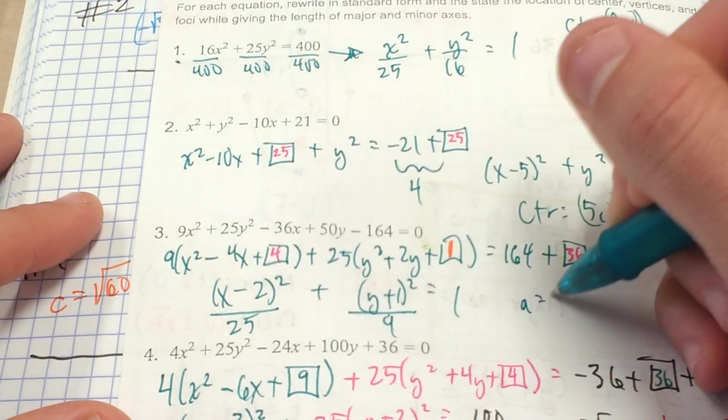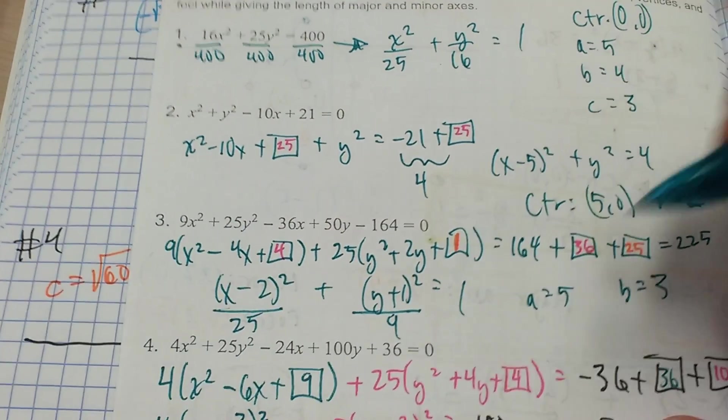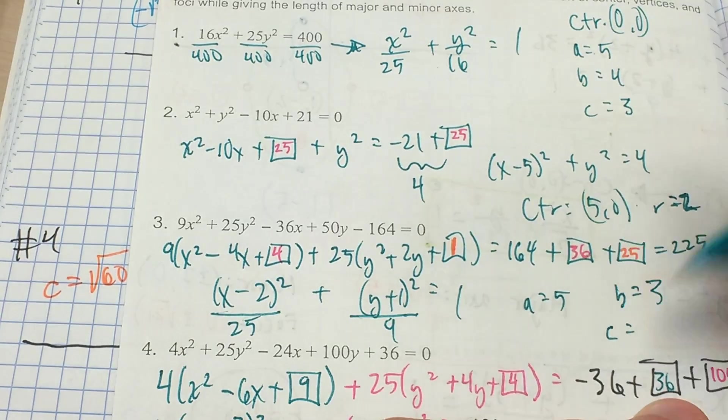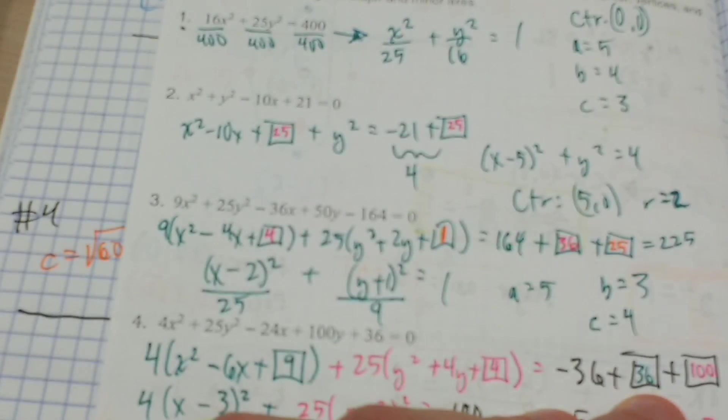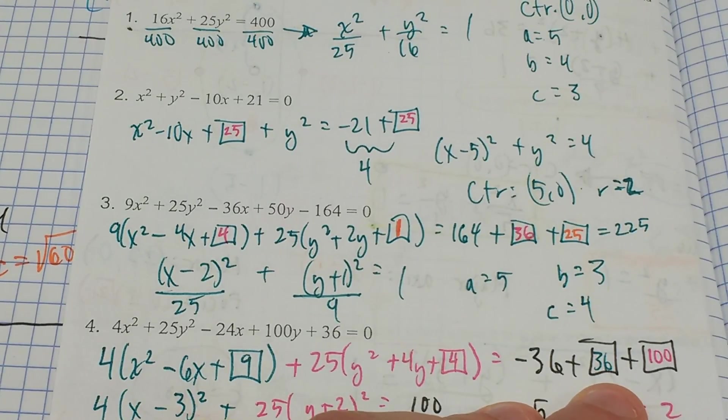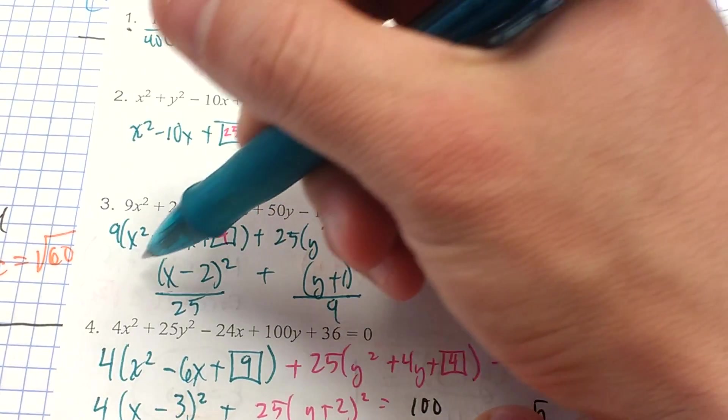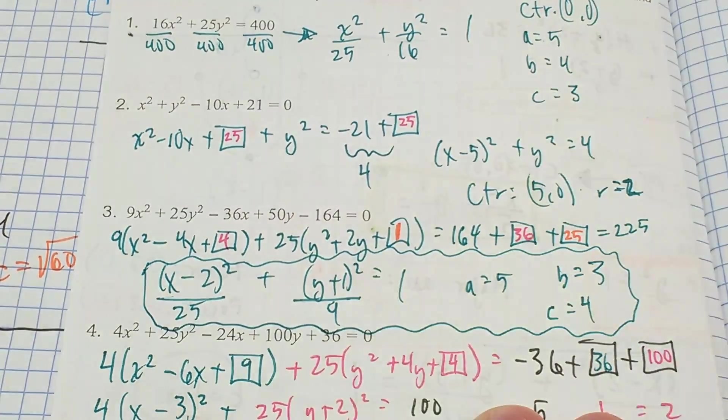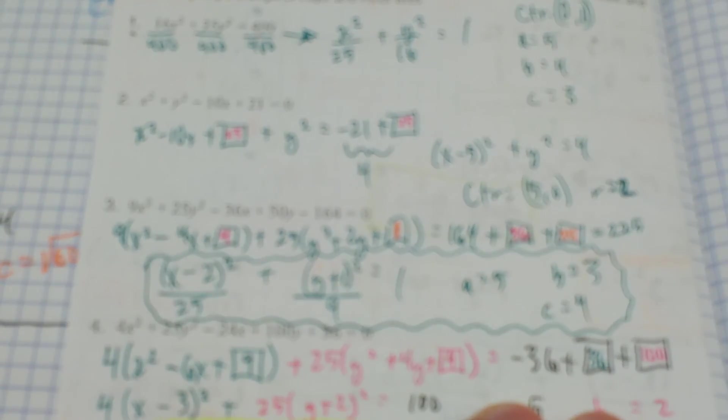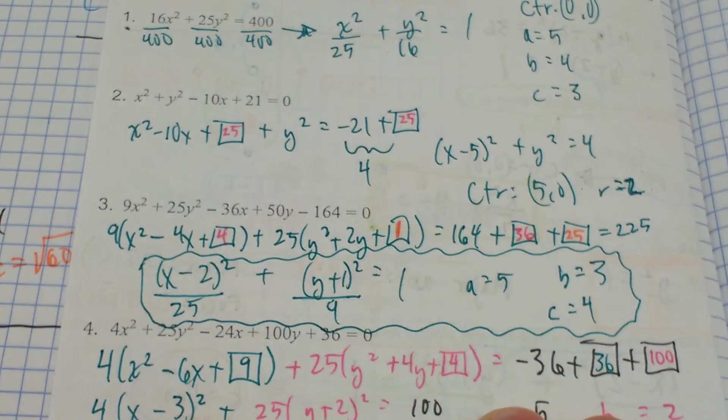So we're going to get a equals 5, b equals 3. And I think that means c is going to have to equal 4. So we have all those values. We have our standard form as well as our values for a, b, and c so that we can then go later on and create an accurate picture for that.